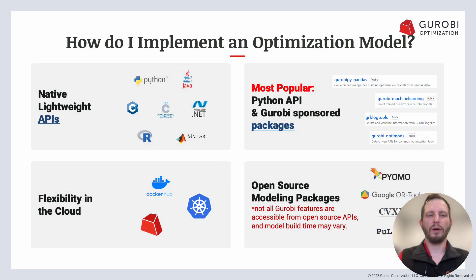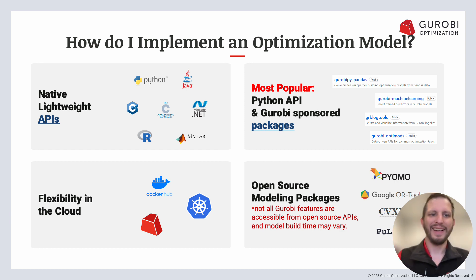You may be thinking: I think optimization could be great for me — how do I implement an optimization model? We have a bunch of different, very lightweight APIs. Python is our most popular, but if you're an R user, there's a Gurobi API there. Matlab, C, Java — pretty much anywhere that you would work on stuff, we have a really good API.